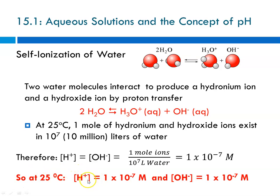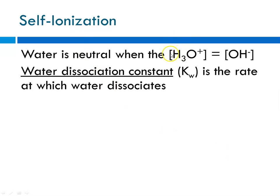At 25°C, the concentration of the hydronium ion equals 1×10⁻⁷, and the concentration of the hydroxide ion also equals 1×10⁻⁷. Water is neutral, meaning H₃O⁺ equals OH⁻ — I use H⁺ and H₃O⁺ interchangeably. There's something called the water dissociation constant, symbolized by capital K sub W. This is the dissociation constant of water, and it tells you the rate at which water dissociates.